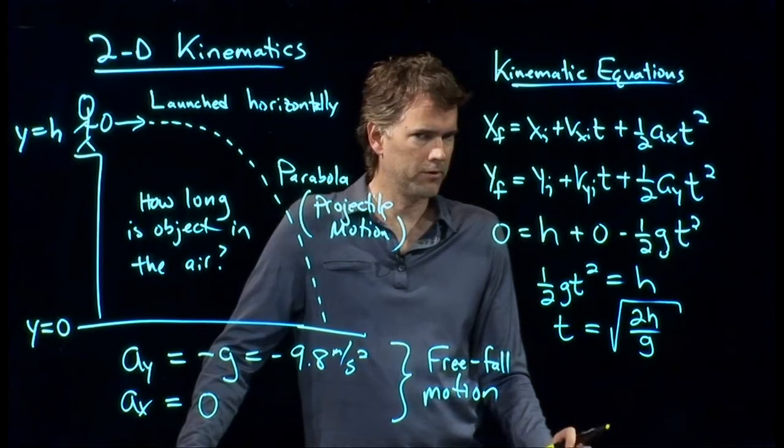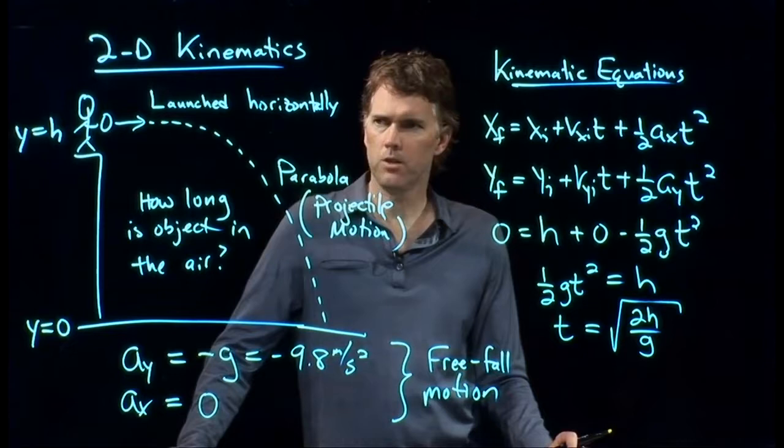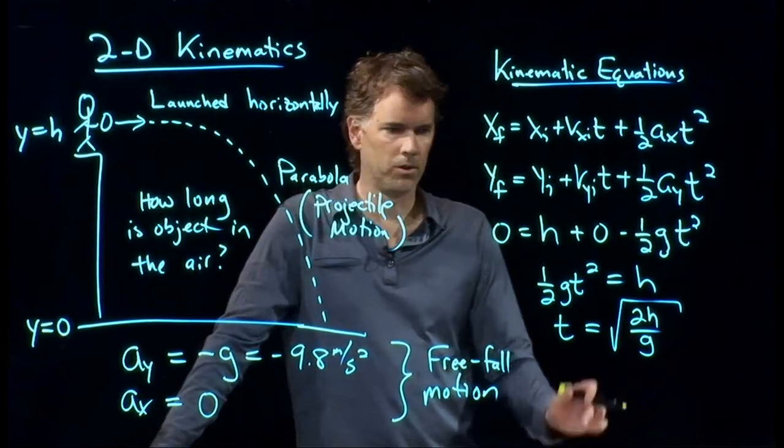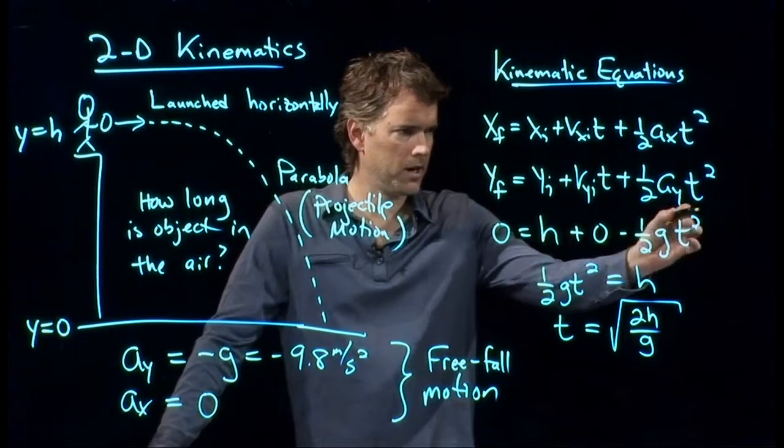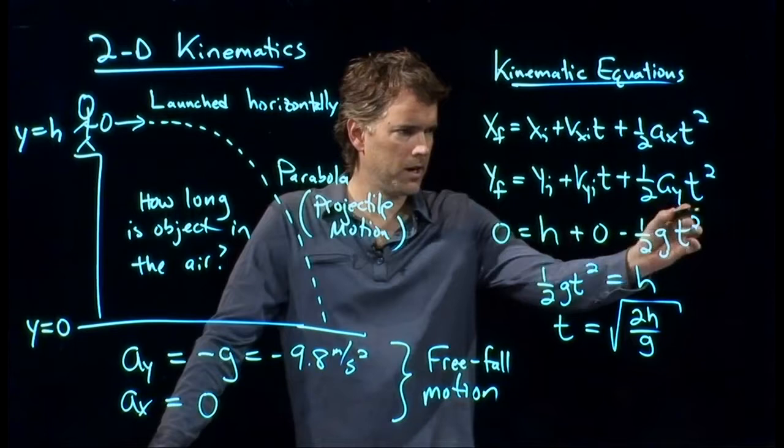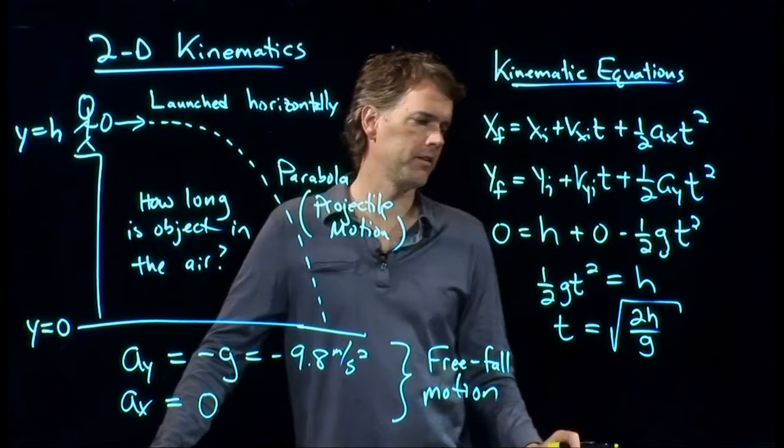Okay. This is the time it takes for any object to fall from a height h. And there's something sort of interesting here, which is the following. Let's say we didn't just launch it horizontally. We just stood there and dropped it vertically. Would this time be exactly the same? Yes. Because this equation right here is only dependent on the height that you started from. Since we have 0 vertical component of the initial velocity, we would get the exact same time.